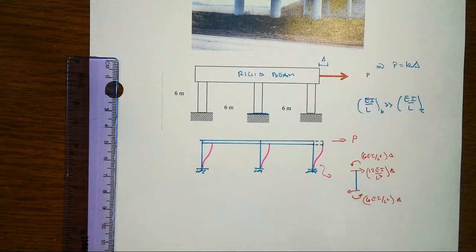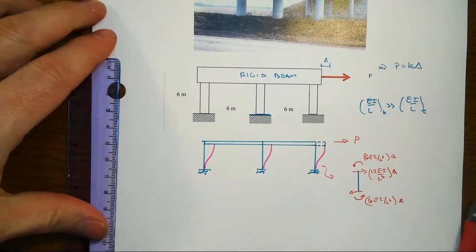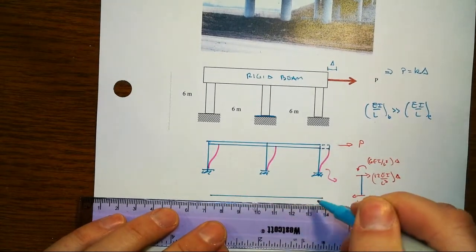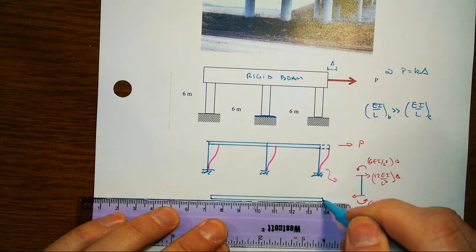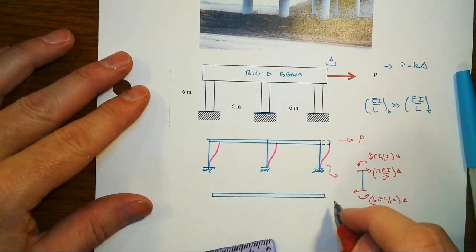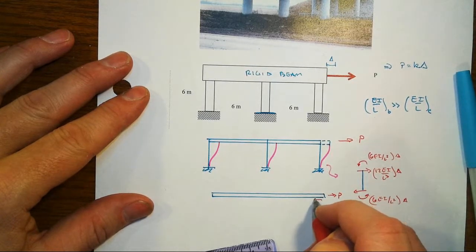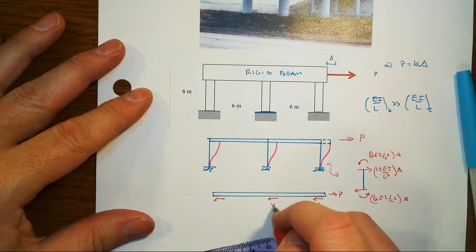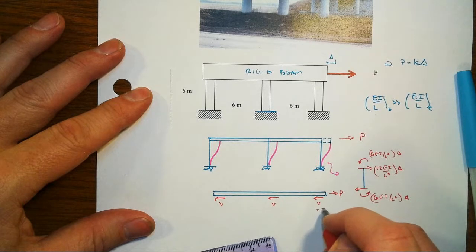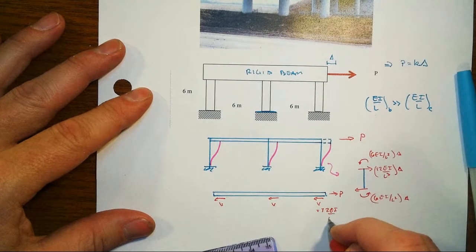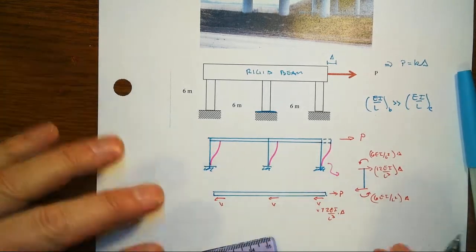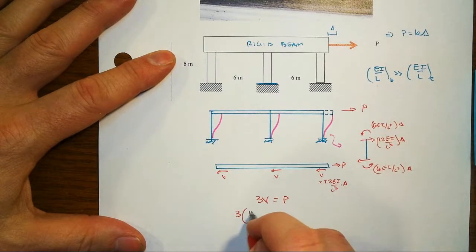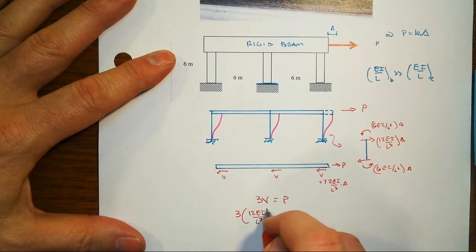And that should make sense just from looking at the free body diagram of the beam in its displaced position, where you've got no curvature in the beam because it's rigid. We've got this force P inducing column shears that, because the columns are identical, are all the same Vs. And each and every one of them is going to be equal to 12EI over L cubed times delta. So add those up by equilibrium: 3V is equal to P, and we have 3 times 12EI over L cubed—that would just be one of those columns—times delta is equal to P.